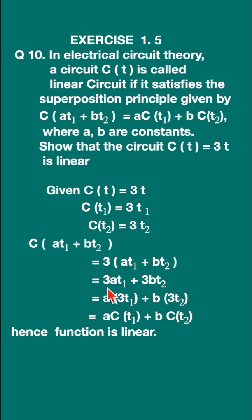Now let us open the bracket. You get 3at₁ + 3bt₂. Now I am going to write it a little different. I am going to write it as a(3t₁) + b(3t₂). We know 3t₁ is C(t₁), 3t₂ is C(t₂). Write it down.